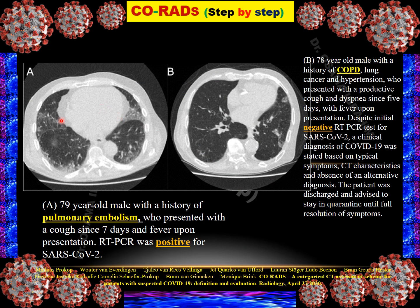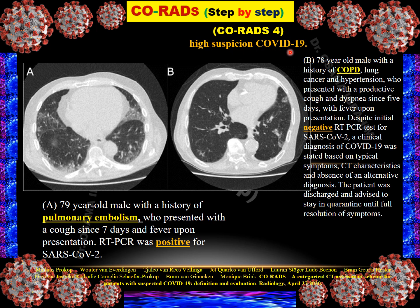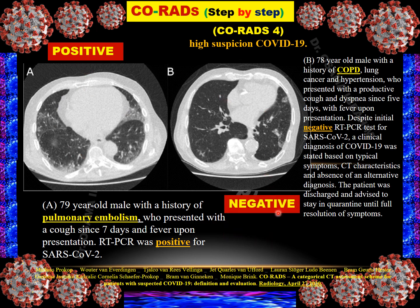Case 7 — two different patients: Both show ground glass opacity with peripheral distribution, pleural surface location, fissural locations, multiplicity, inverted halo signs — all features of CO-RADS 5. However, the first patient has pre-existing pulmonary embolism, making it CO-RADS 4 — high suspicion of COVID-19. The second patient has COPD and lung cancer, also making it CO-RADS 4. PCR was positive for the first patient and negative for the second. This illustrates that CO-RADS 4 is high suspicion but not a definitive diagnosis — RT-PCR remains the test of choice.